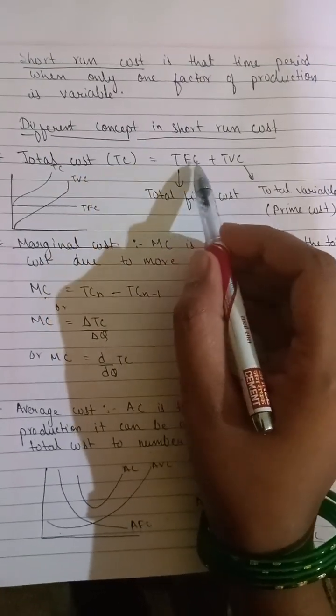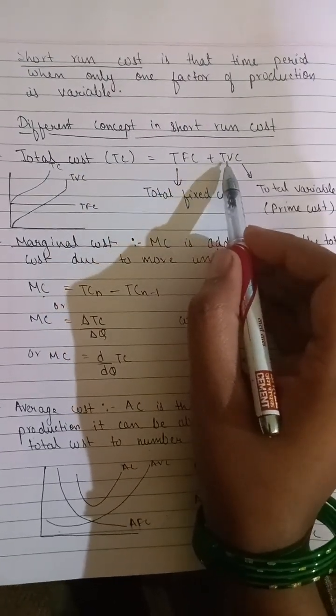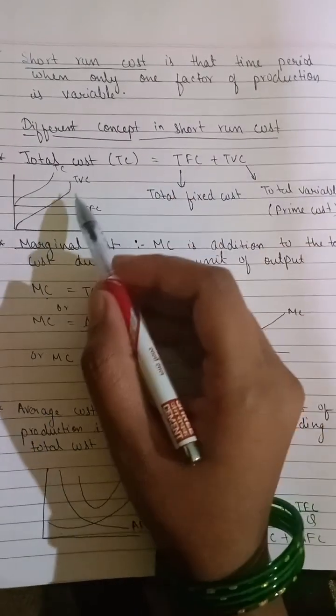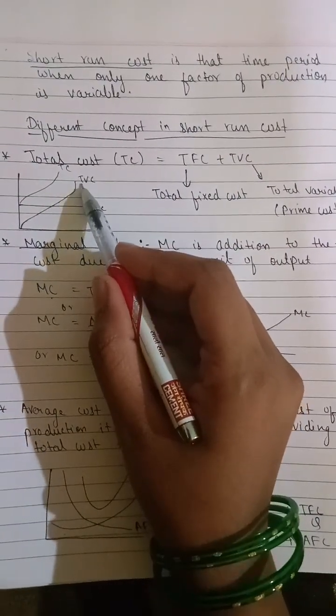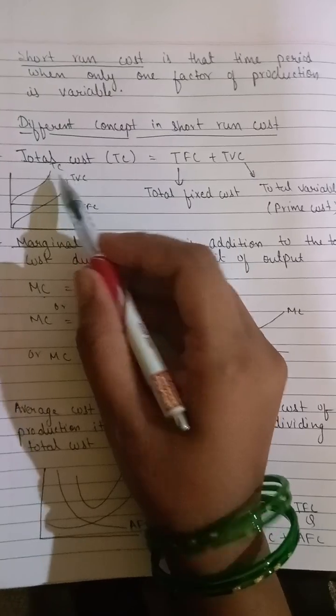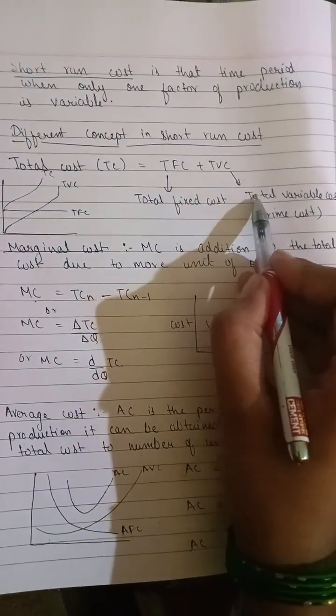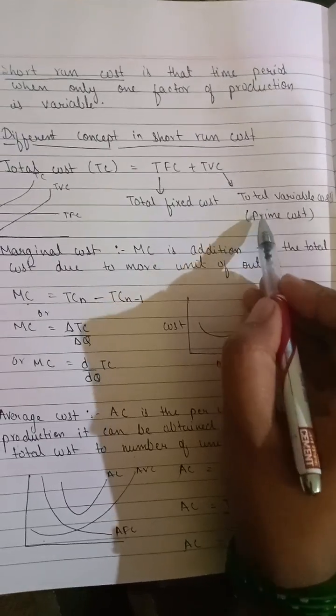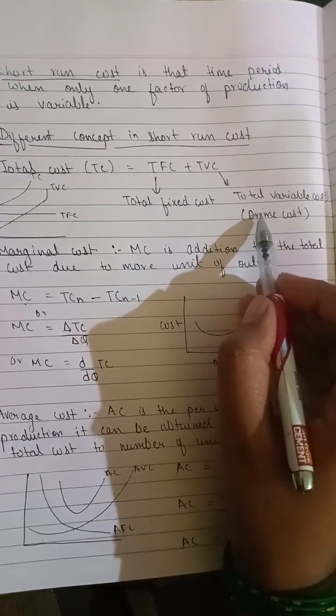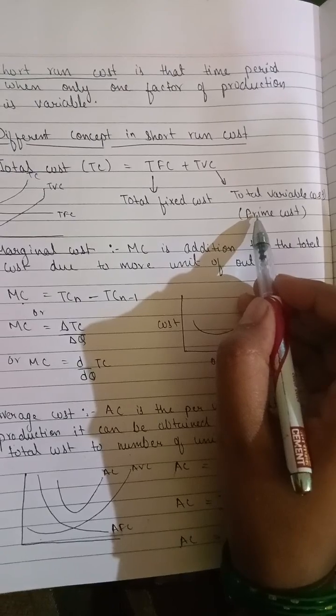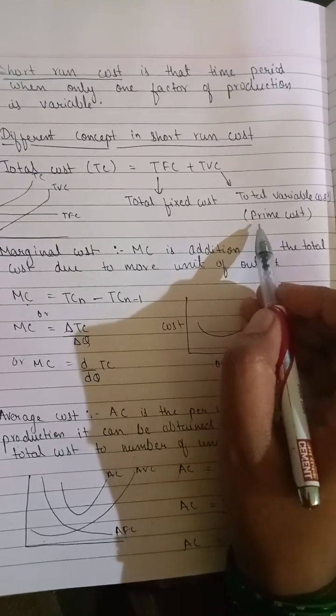Total cost is equal to total fixed cost plus total variable cost. The components are: total fixed cost, total variable cost, and total cost. Total variable cost is also known as prime cost or outlay cost.